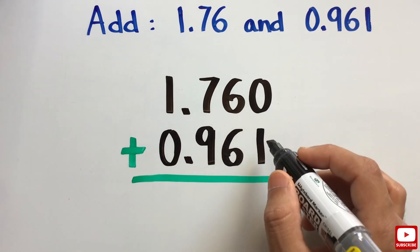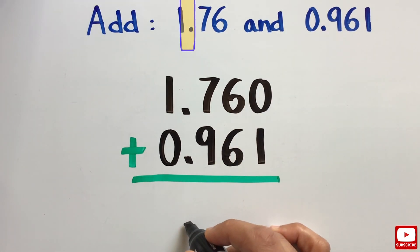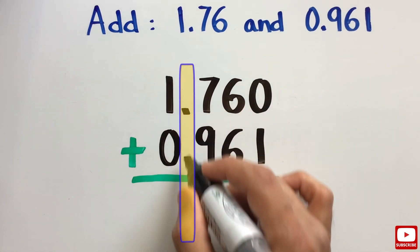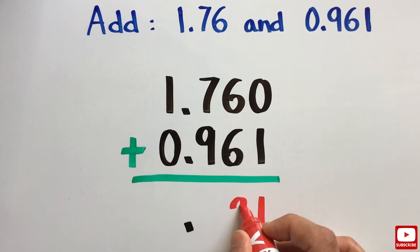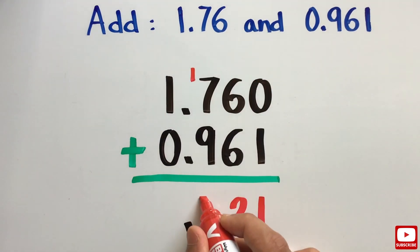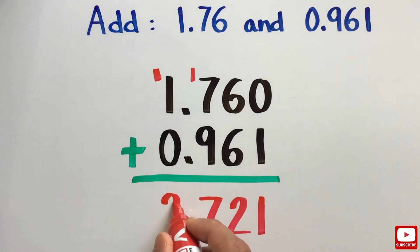And before adding the numbers, we place the decimal point in the answer in such a way that all the decimal points line up. And then we add the decimal numbers in the same way we add the whole numbers.